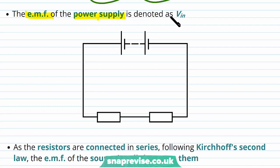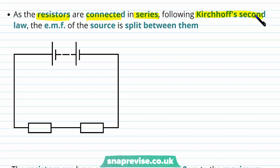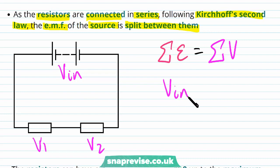The EMF of the power supply is denoted as VIN. As the resistors are connected in series, following Kirchhoff's second law, the EMF of the source is split between them, giving a potential difference V1 and V2 across each resistor. The sum of the EMFs, which is VIN, equals the sum of the potential differences across the components, so VIN = V1 + V2.